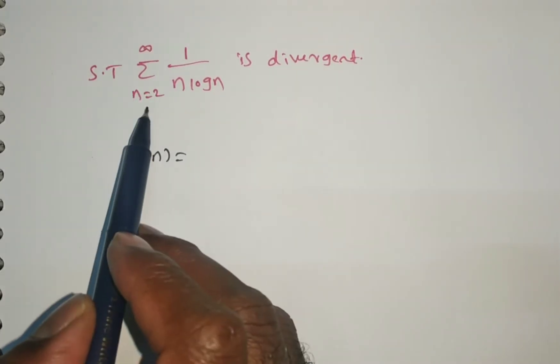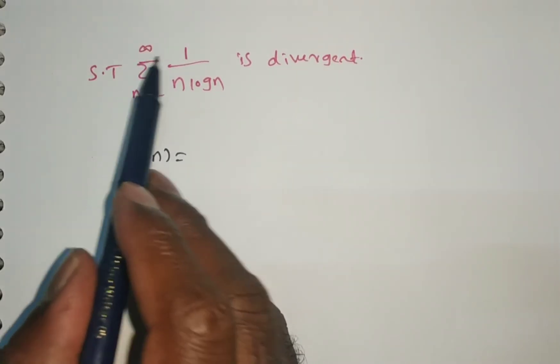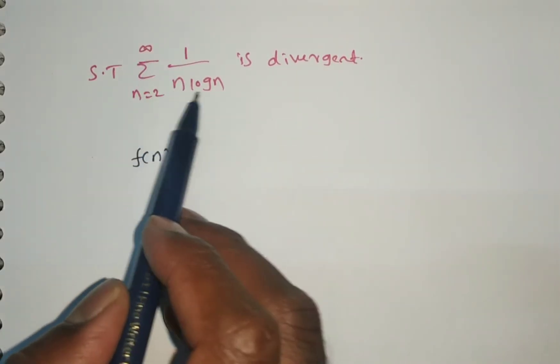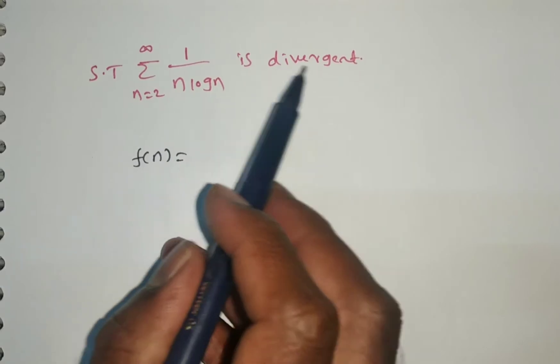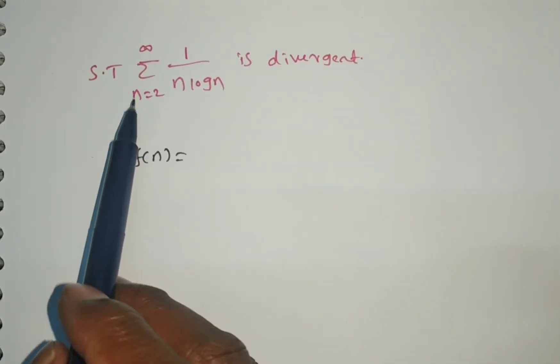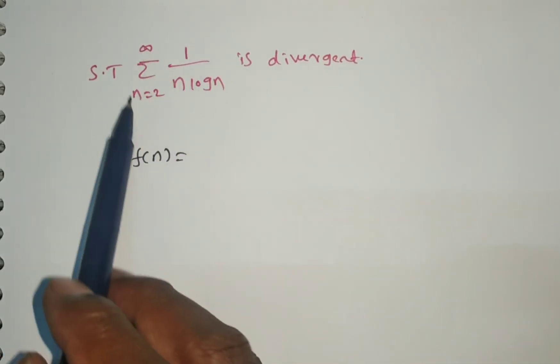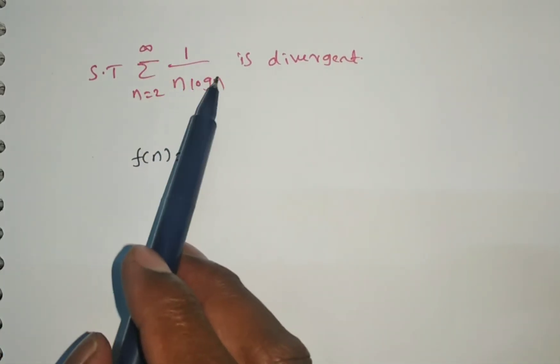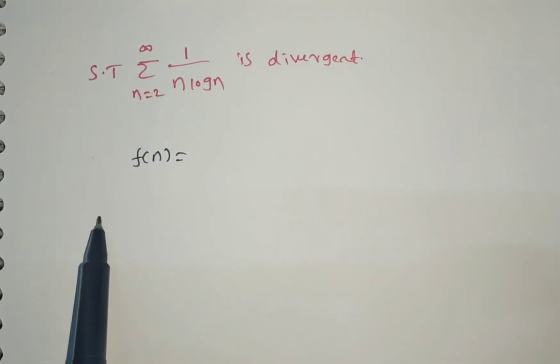Show that the summation from n equals 2 to infinite of 1 by n log n is divergent. We have to prove this infinite series is divergent.